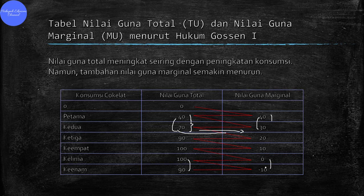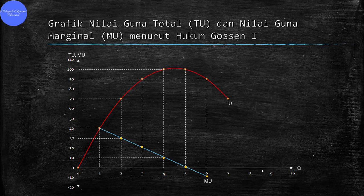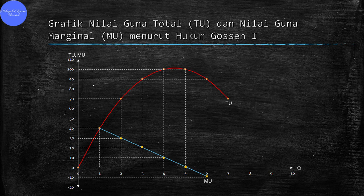Setelah kita mendapatkan tabel tersebut, maka kita dapat membuat grafiknya. Kita membuat grafik nilai guna total dan nilai guna marginal menurut Hukum Gossen 1. Di sini ada garis vertikal dan garis horizontal. Garis vertikal itu adalah total utility dan marginal utility, sedangkan garis horizontal itu menunjukkan tentang konsumsi, dengan nilai 1, 2, 3, 4, 5, dan 6.